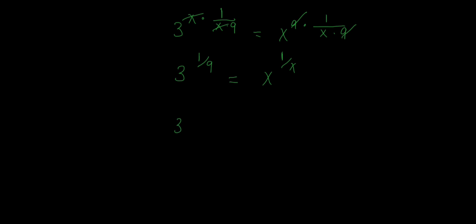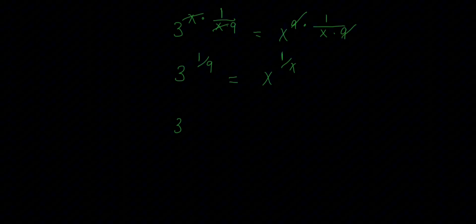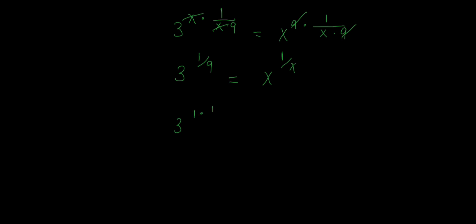Notice that if I multiply the exponent by 1, nothing will change. If I say 1 multiply the exponent, nothing will change. And this one can be written as 3 over 3.